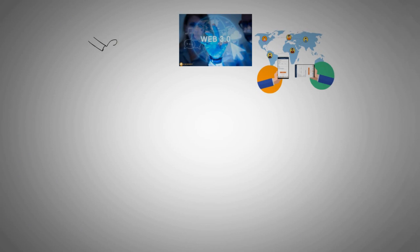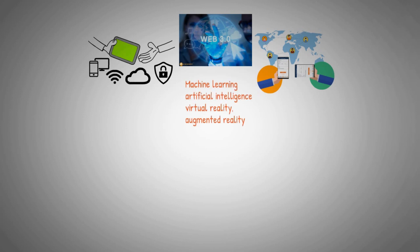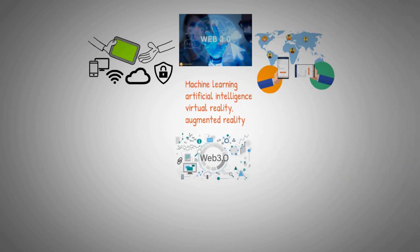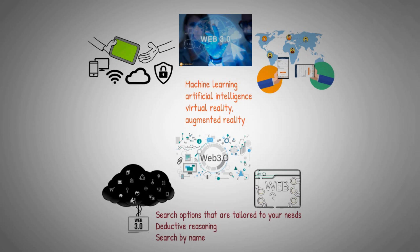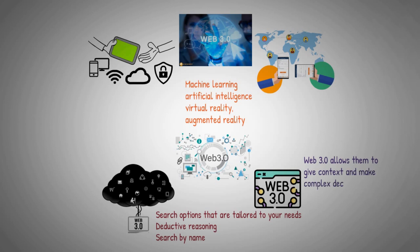Transition to Web 3.0. Web 3.0 is still in its infancy, but it's primarily focused on making applications connect with other applications independent of user input. Machine learning, artificial intelligence, virtual reality, and augmented reality make connecting data and information on the internet easier. Applications can now interpret data in Web 3.0 to generate additional analysis and efficiency. Web 3.0 allows for contextual search, deductive reasoning, and searching by name. However, Web 3.0 does not allow applications to connect to data and execute functions without user input, though it does allow them to give context and make complex decisions. Web 5.0 is here to help with these limitations.